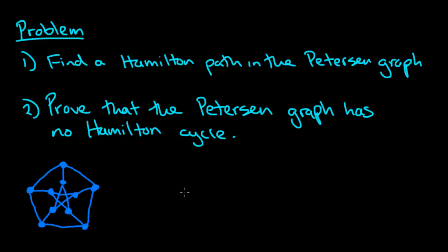I'm looking at the Petersen graph in this video, and that is this graph right here. What we're first going to do is find a Hamilton path in the Petersen graph, and then prove that the Petersen graph has no Hamilton cycle.